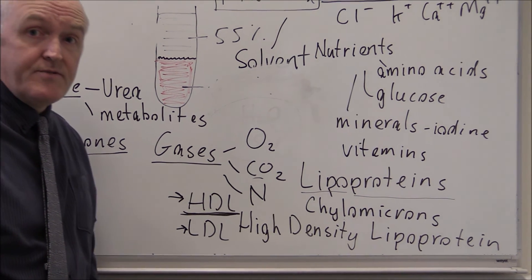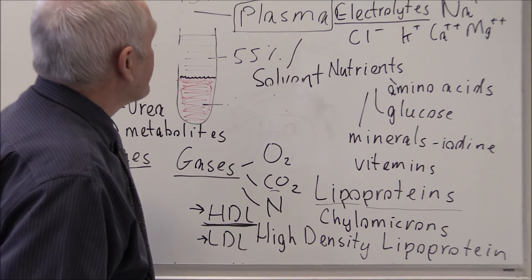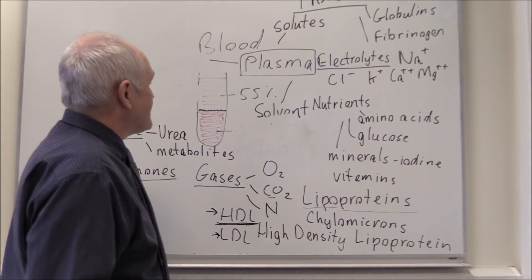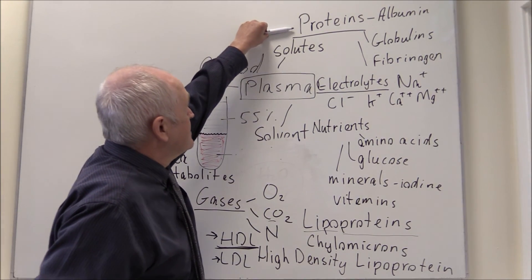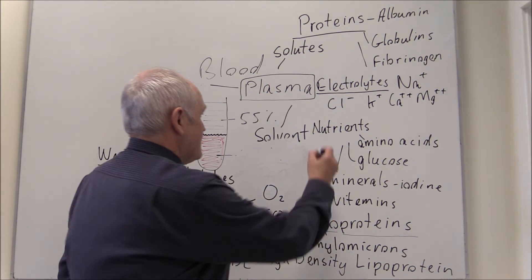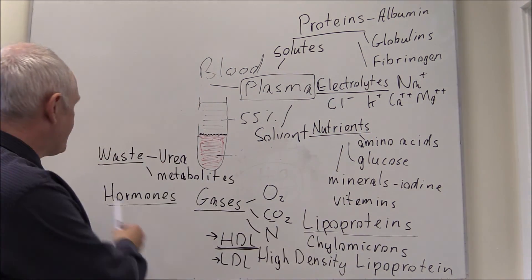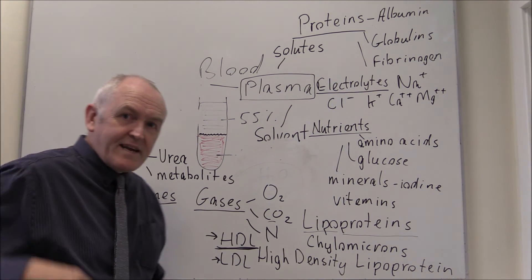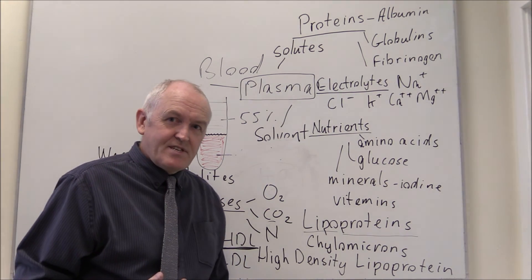So that's just a quick tour of the plasma. We've considered the fact that blood is divided into the plasma and the cells. The plasma's solvent is water, and the solutes include proteins, electrolytes, nutrients, lipoproteins, waste products, hormones, and gases - all being carried around the body in this great circulatory system, which is the blood.